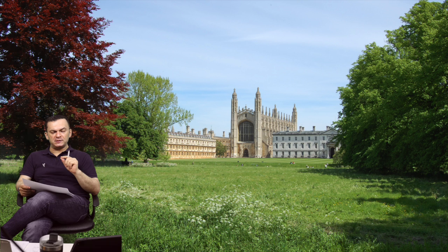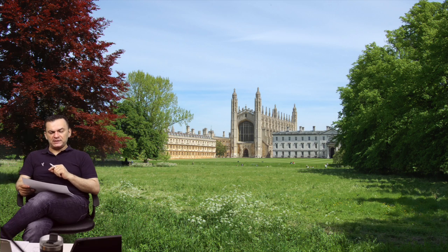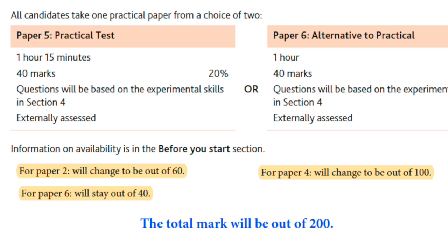For example, if you lose one mark in paper six and one mark in paper four, the mark lost in paper four will affect your overall more, because the load of paper four is much higher than paper six. The total marks across all papers is 160: paper two is 40 marks, paper four is 80 marks, and paper five or six is 40 marks — so 40 plus 80 plus 40 equals 160.